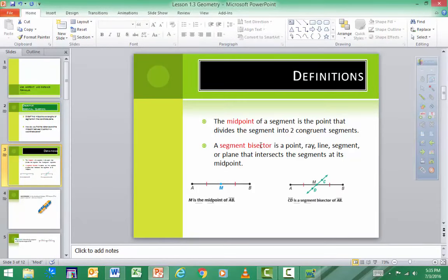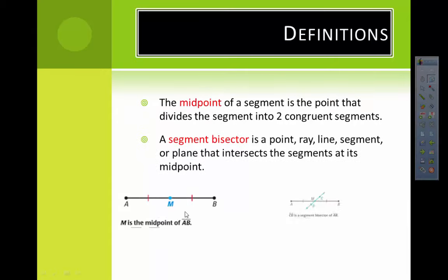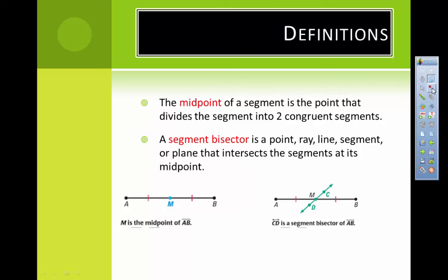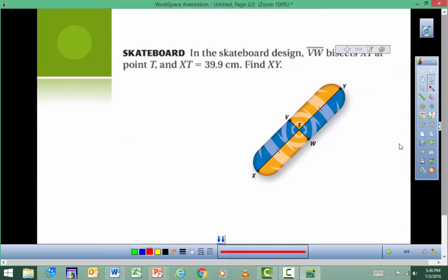We're right here. So we talked about midpoint and a segment bisector. The bisector could be a ray, a line, a segment, or whatever, but it's going to intersect at the midpoint. Let's do an example. Some of this stuff is pretty easy.